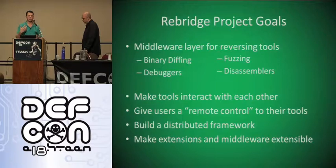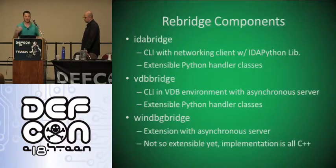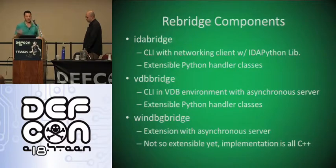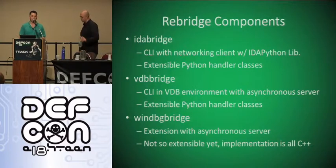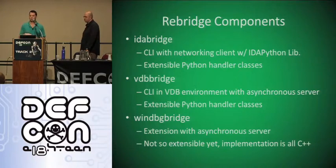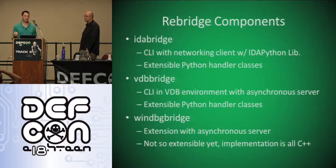We want to make this middleware extendable using Python or Ruby. The components built so far include IDABridge, a command-line interface using an asynchronous networking client pulled from Collaborate — again emphasizing use of open source software. We modified the IDAPython lib so we don't have to rewrite everything in C++ for interfacing with IDA Pro; we can rely on Python and extend handler classes by writing a new Python class with defined command elements. We also incorporated vtrace and vdb, products of Concerto and Visigoth.